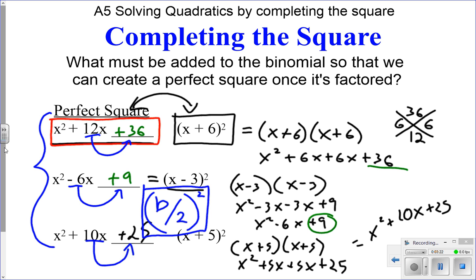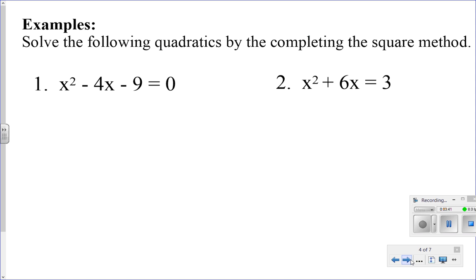Notice 10 divided by 2 is 5. 5 squared is 25. Negative 6 divided by 2 is negative 3, squared is 9. So let's go ahead and try some examples of solving these out. So solve the following quadratics by completing the square method.